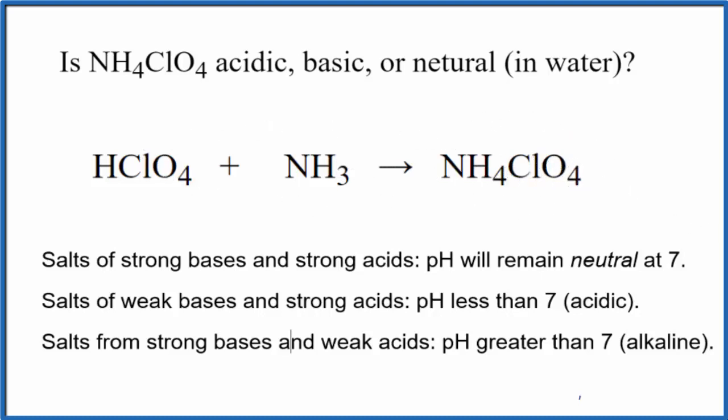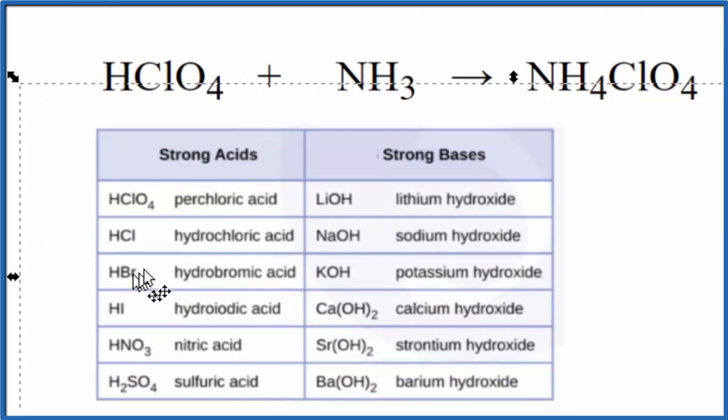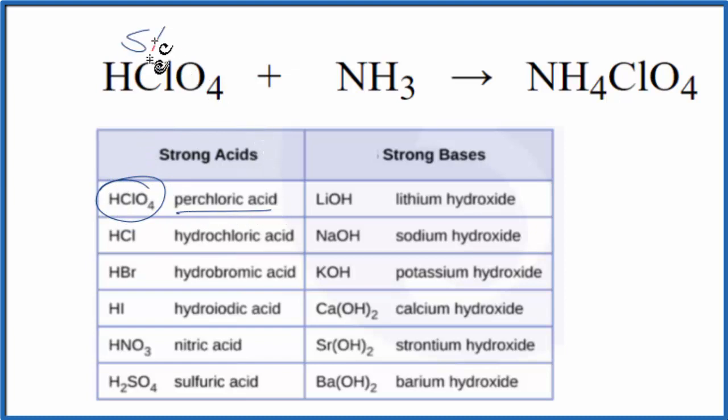Once we know the equation, we need to look up whether the acid and base are strong or weak. So this is a really helpful table, one you might want to memorize. We have strong acids, and here is HClO4, perchloric acid. That's a strong acid.